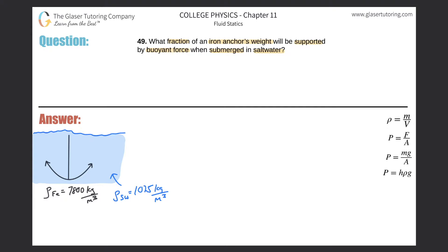You might say, I know what two things we're talking about: the iron anchor's weight and the buoyant force. But which one goes where - on the bottom or top? The buoyant force goes on top, and the iron anchor's weight (the weight of the iron, Fe) goes on the bottom.